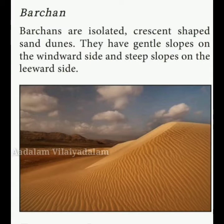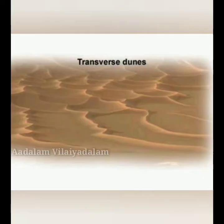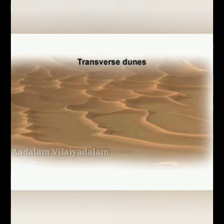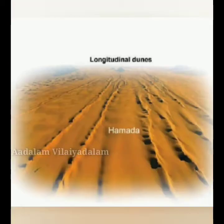Barchans are isolated crescent-shaped sand dunes. They have gentle slopes on the windward side and steep slopes on the leeward side. Transverse dunes are asymmetrical in shape and are formed by alternate slow and fast winds blowing from the same direction. Longitudinal dunes are long, narrow ridges of sand that extend in a direction parallel to the prevailing winds.